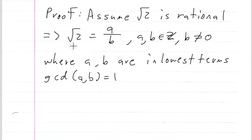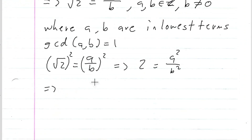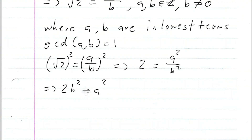Going back to our equation: the square root of two is equal to A over B. We can square both sides to get two equals A squared over B squared. Multiplying both sides by B squared gives us two B squared equals A squared. Since B is an integer, B squared is an integer, so A squared equals two times an integer, which means A squared is even.